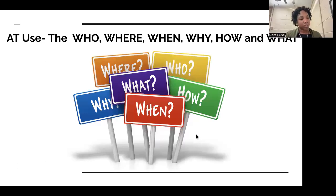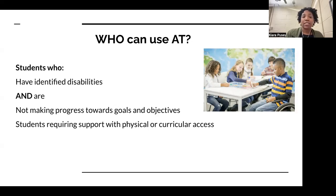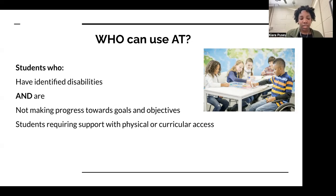Now we're going to talk about the who, what, when, where, and how of assistive technology. Who can use it? Typically a student who is not making progress towards their academic goals or objectives — for example, a fifth grade student struggling with reading or single-digit addition. Or a student who requires physical access due to an orthopedic impairment, such as a student with restricted use of their arms who may need support turning a page in a book.